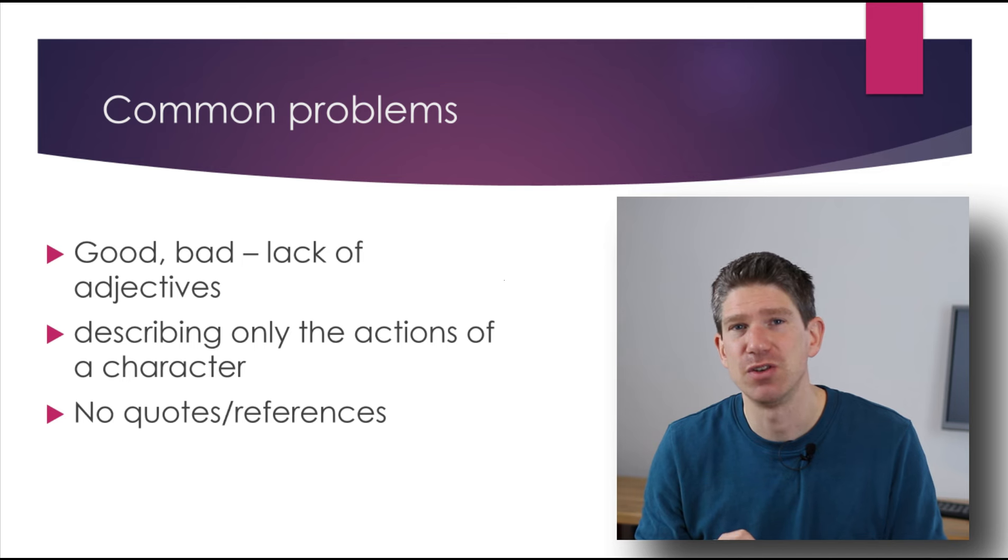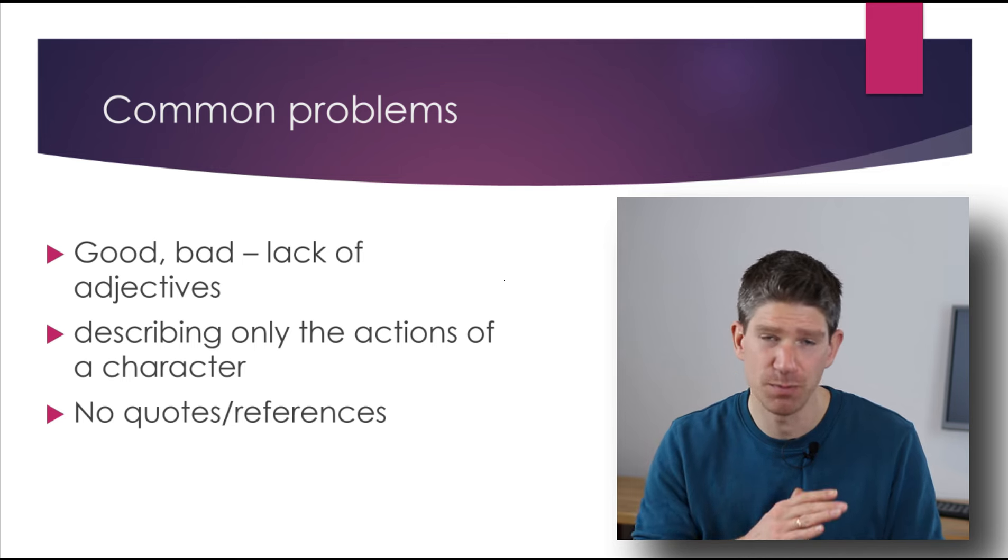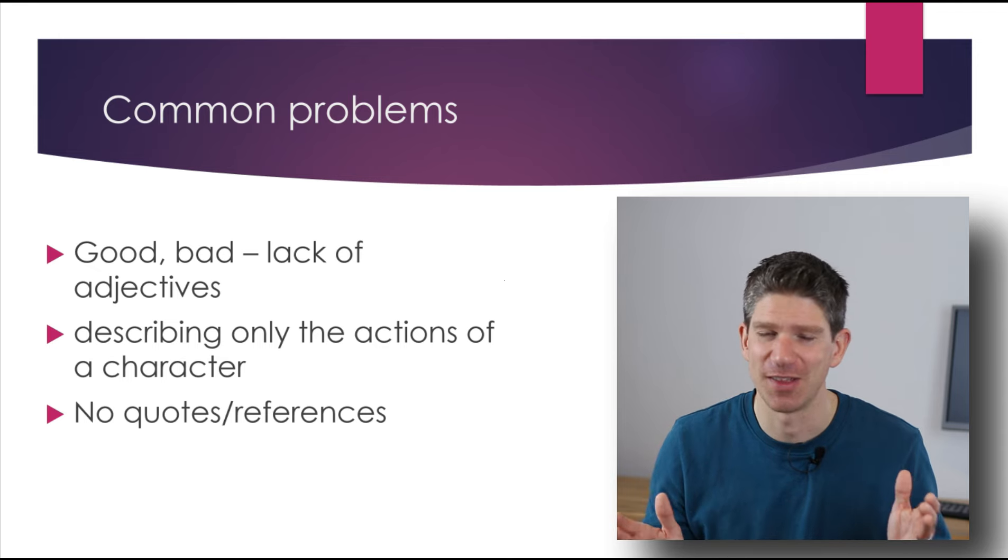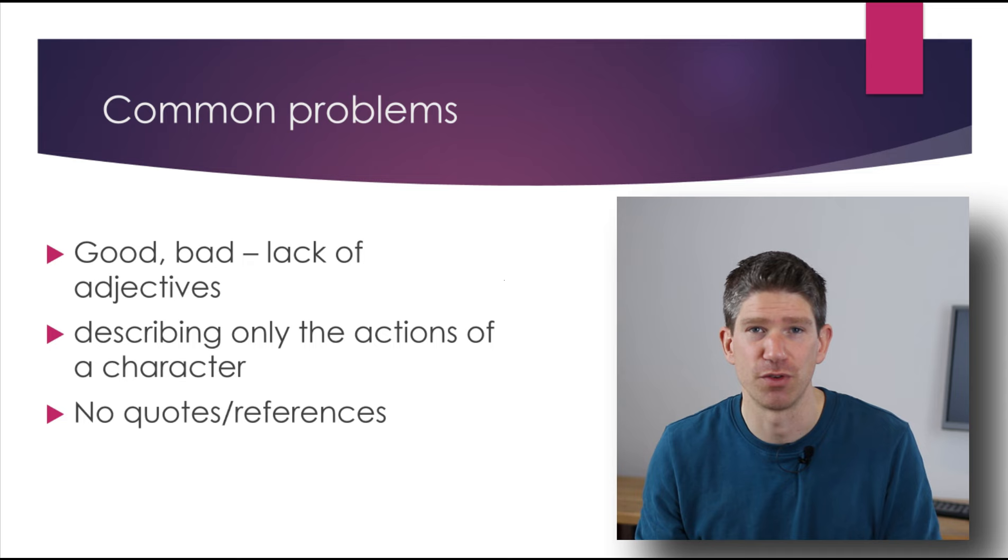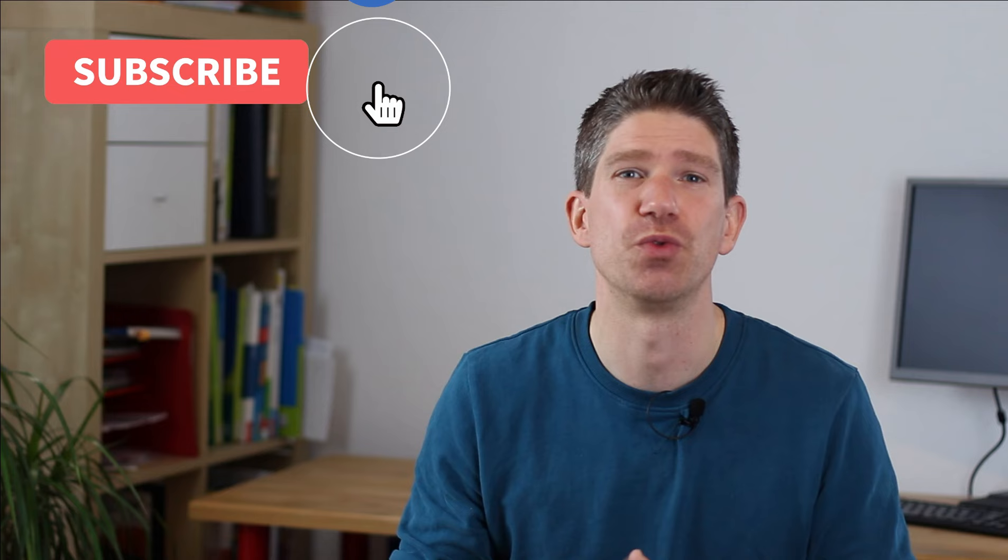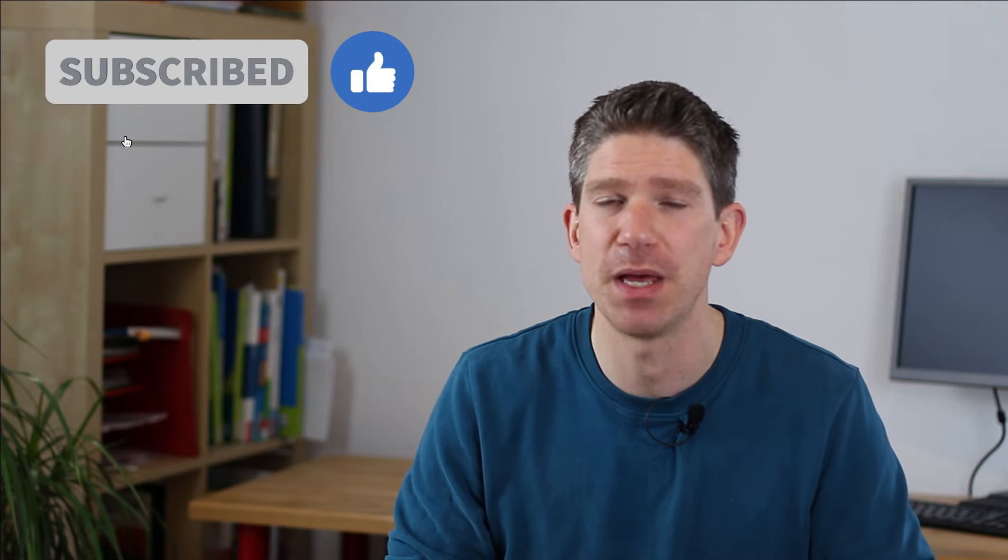And one of the biggest mistakes is not giving proof, not giving evidence from the text. You need some quotes or references that show you're not just making this up, but you're actually using something from the text to come up with your interpretations. I hope that helps a little bit in how to write a characterization and you feel better about this now. And if you need more information on English, take a look around on my channel. There are many more videos on similar topics. I hope to see you soon here and have a good one. Goodbye!